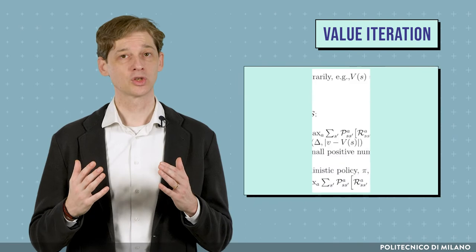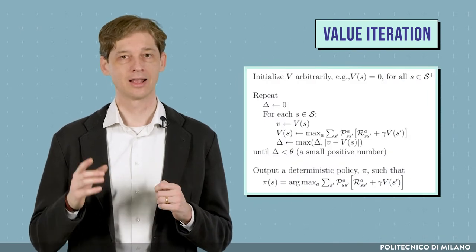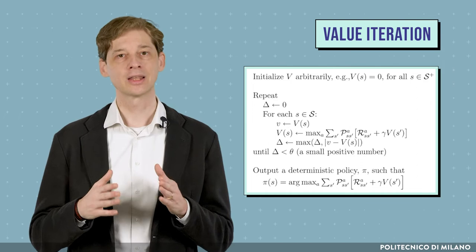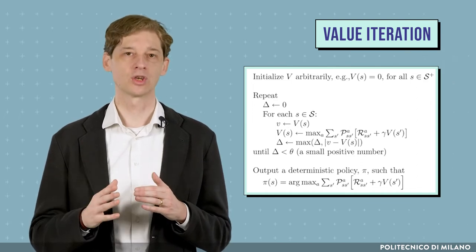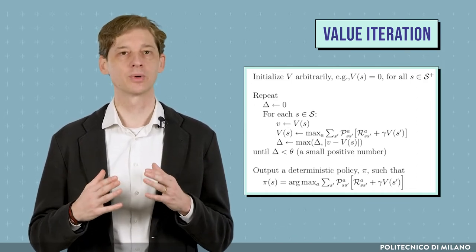In value iteration, we start from an arbitrary value function and, iteratively, we apply the right-hand side of the Bellman Optimality Equation to the value function output in the previous iteration.